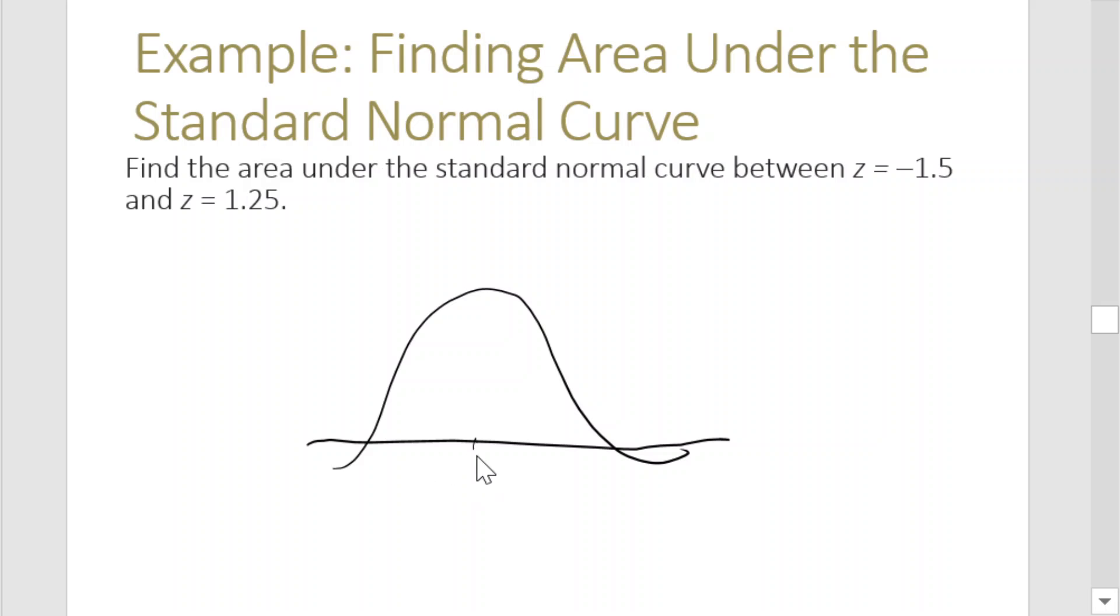So plot them: this is 0, positive 1.25 is around here, and negative 1.5 is here. The area being asked for is this area between them.